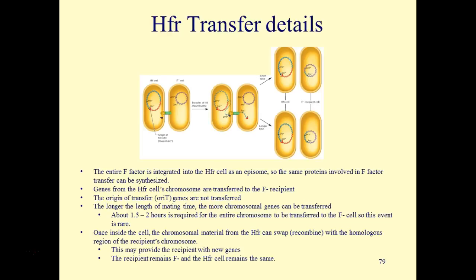Once inside the recipient cell, chromosomal material from the HFR can recombine with the homologous region of the recipient's chromosome. If a similar gene is present, it can swap out for that gene. This may provide the recipient with new genes. The recipient remains F-minus, and the HFR cell remains an HFR cell.